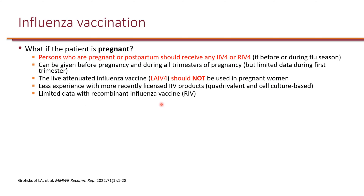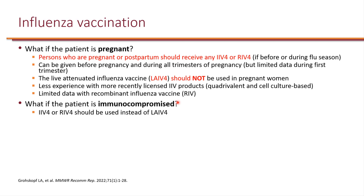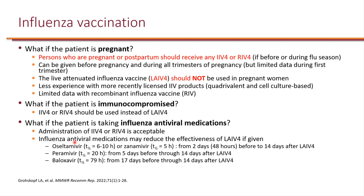For immunocompromised patients, the same recommendation applies: either inactivated influenza vaccine or recombinant, including inactivated egg-based or cell-cultured, similar to pregnancy. Live attenuated should not be used in immunocompromised patients because the vaccine replicates in the body, and without adequate immune function, replication can get out of control.